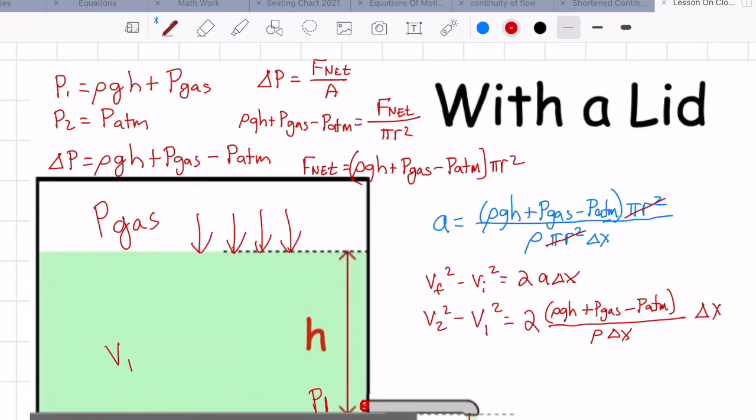So we had 2a delta x. You can see the delta x is canceled, just like they did last time. We're going to move the 2 and this bottom density to the other side of the equation.